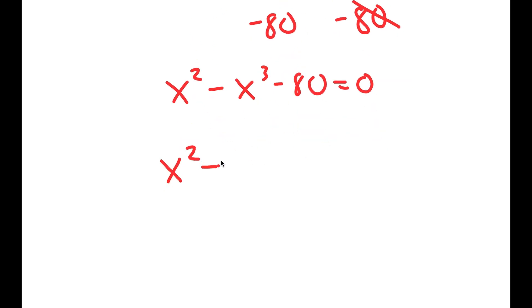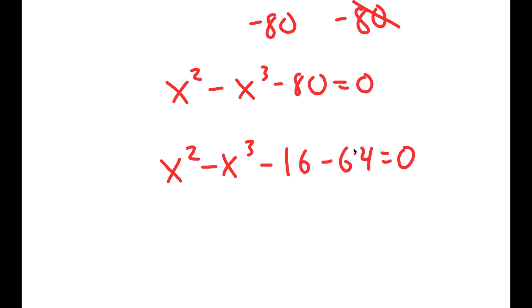Now I can rewrite this as x² - x³ - 16 - 64 = 0. So I wrote negative 80 as negative 16 minus 64.